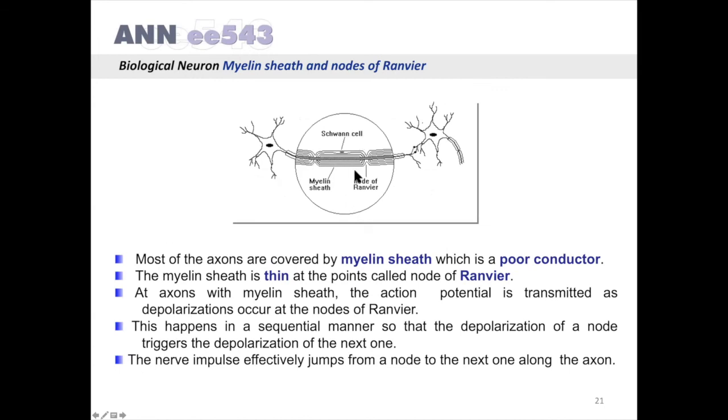Most of the axons are covered by myelin sheath, which is a poor conductor. The myelin sheath is thin at the points called nodes of Ranvier.